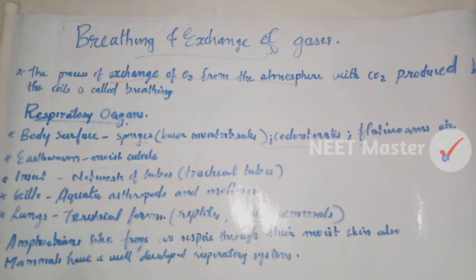Terrestrial forms — reptiles, birds, and mammals — are our vertebrates, and they have a well-developed respiratory structure. Amphibians, like frogs, can perform respiration through their moist skin.